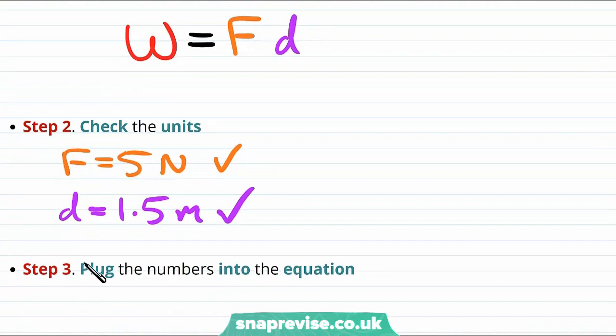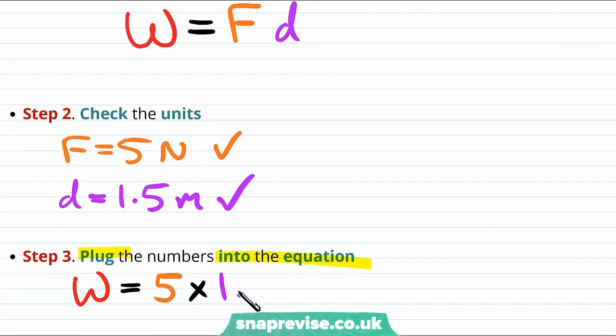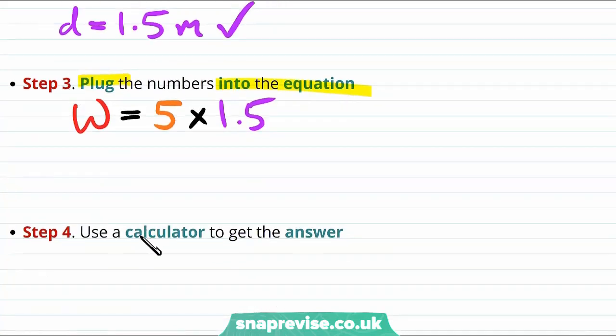This means we're ready to plug our numbers into the equation. Doing this we find that the work done is equal to the force multiplied by the distance. And finally putting this into a calculator to get our answer gives that the work done is equal to 7.5 joules.